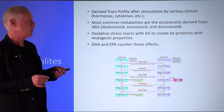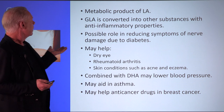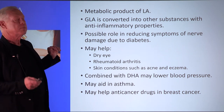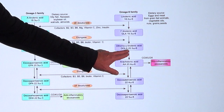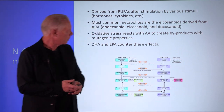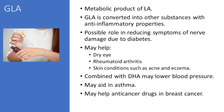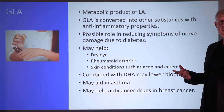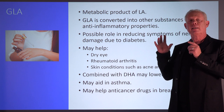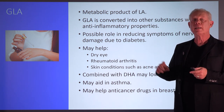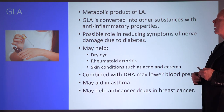GLA — gamma-linolenic acid — is a metabolic product that is actually a good thing. It's anti-inflammatory in the body and may help with dry eye, rheumatoid arthritis, and skin conditions. It can work with DHA to treat blood pressure and help with asthma. So not everything from linoleic acid is bad. It can make arachidonic acid at a very low rate, but it also makes GLA, which is a very positive thing in our body.